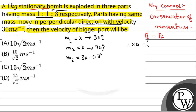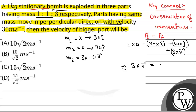The final momentum will be x × 30 î-cap plus x × 30 ĵ-cap, giving us 30x î-cap plus 30x ĵ-cap, plus the momentum of the third part 3x × v. From here we will have 3x × v equal to minus 30x î-cap minus 30x ĵ-cap. Now if we take the magnitude of both sides.